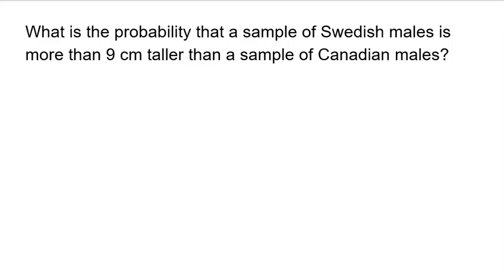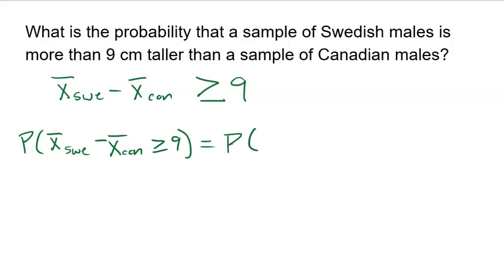The first question I have for you is what is the probability that a sample of Swedish males is more than 9 centimeters taller than a sample of Canadian males? I did it in the order Swedish men minus Canadian men, and I'm looking for this difference to be greater than or equal to 9. The normal model doesn't differentiate between greater than or greater than or equal to. The normal model cannot calculate exact probabilities of single events anyway. To do that, I need to first find the Z-score so I could use normal CDF on my calculator.